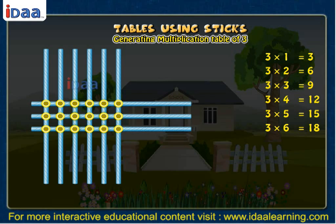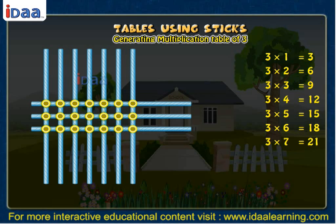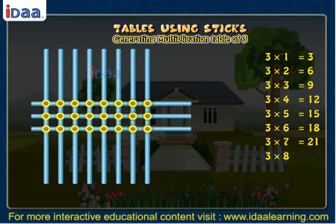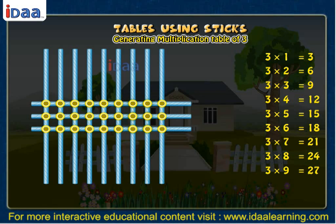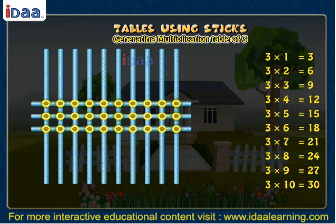If we put 7 sticks vertically, we shall get 21 points of intersection. If we put 8 sticks vertically, we shall get 24 points of intersection. If we put 9 sticks vertically, we shall get 27 points of intersection. If we put 10 sticks vertically, we shall get 30 points of intersection. That's the multiplication table of 3.